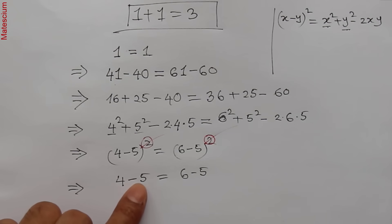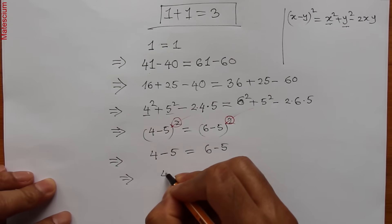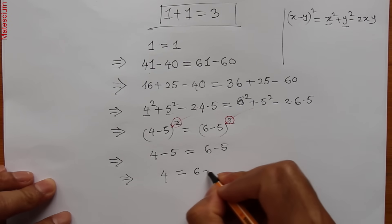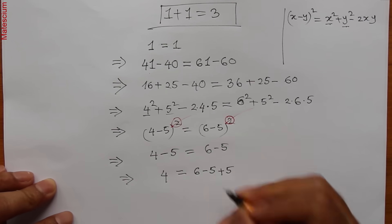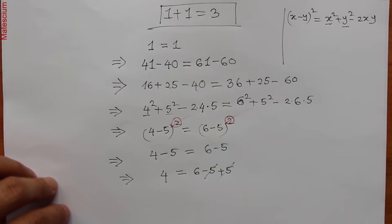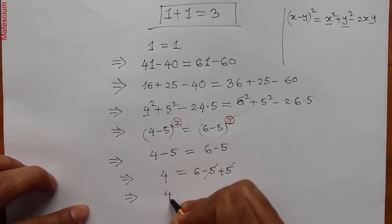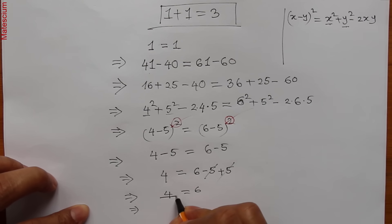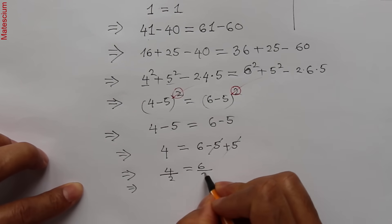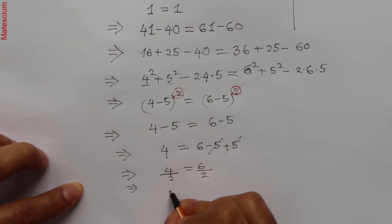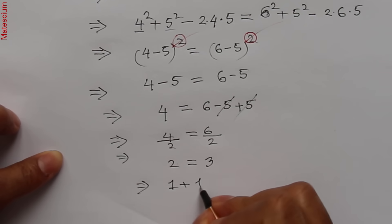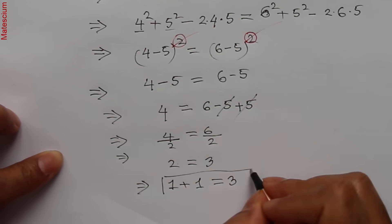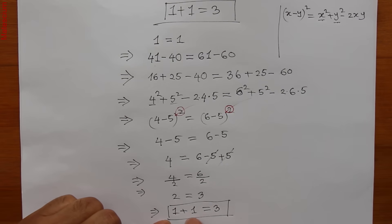I can move minus 5 from the left to the right hand side, making it plus 5. The left side becomes 4, and the right side becomes 6 minus 5 plus 5 — the minus 5 and plus 5 cancel each other, leaving 4 equals 6. Dividing both sides by 2 gives 2 equals 3. That means 2, which is 1 plus 1, equals 3.